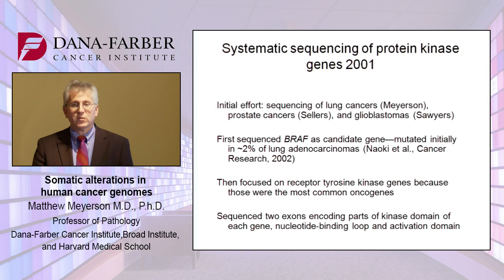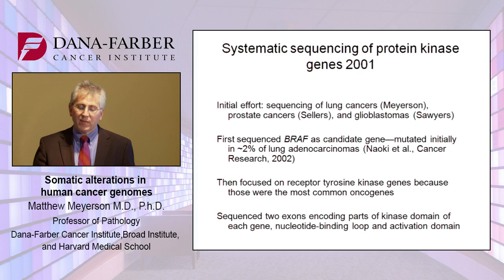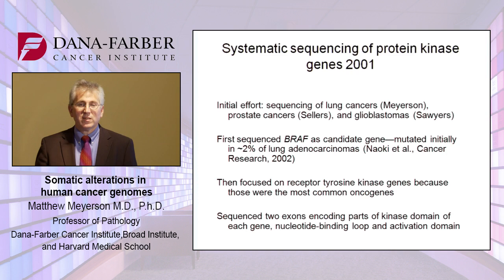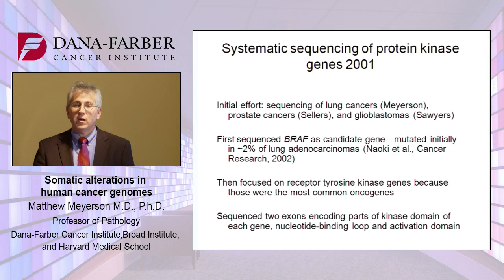We then broadened our focus to study receptor tyrosine kinase genes, because these were the most common known oncogenes, and we thought we might have the greatest clinical impact by beginning with these genes. At that time, we sequenced two exons encoding parts of the kinase domain of each gene — the nucleotide binding loop and the activation domain. Just by comparison, we're now sequencing 200,000 exons — 100,000-fold more from each sample — and moving now more and more to the study of whole genomes.